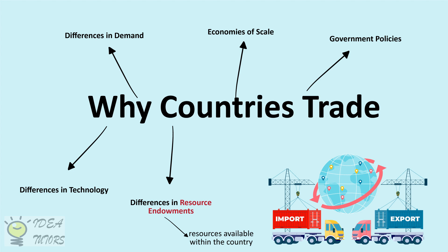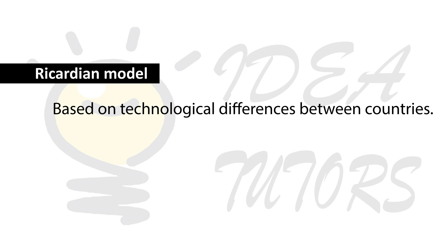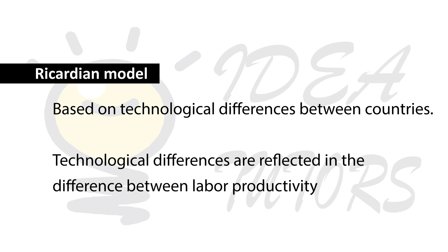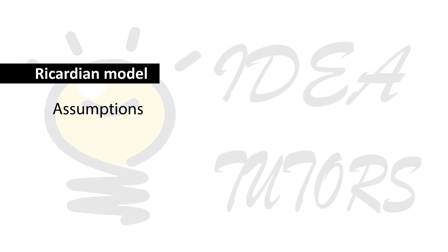The Ricardian model of international trade is based on technological differences across countries. These differences are reflected in differences in labor productivity. Like any economic theory, the Ricardian model is also based on assumptions.